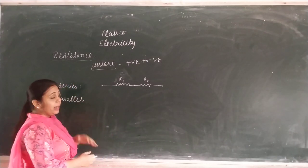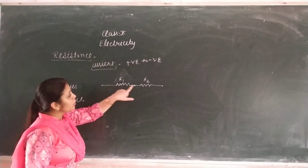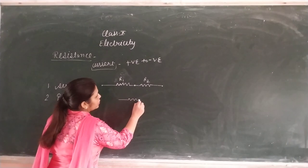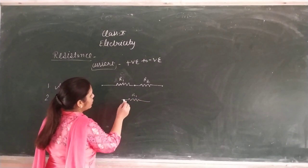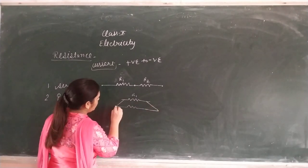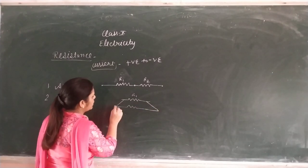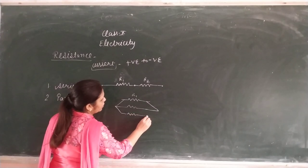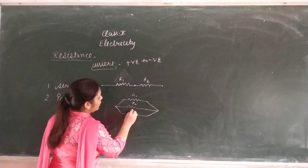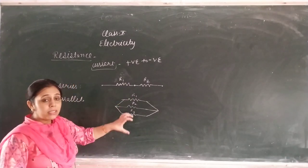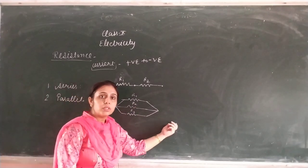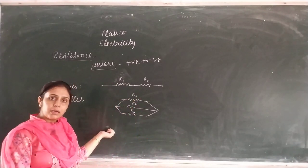In parallel combination, there are two or more resistances — R1, R2, and R3. All their one ends are joined together on one side, and all the other ends are joined together on the other side. That is called the parallel combination.